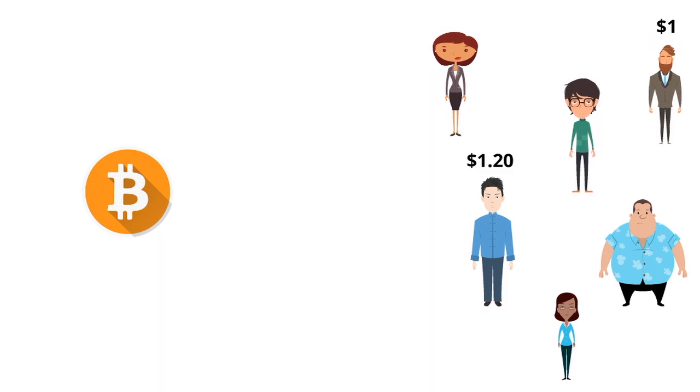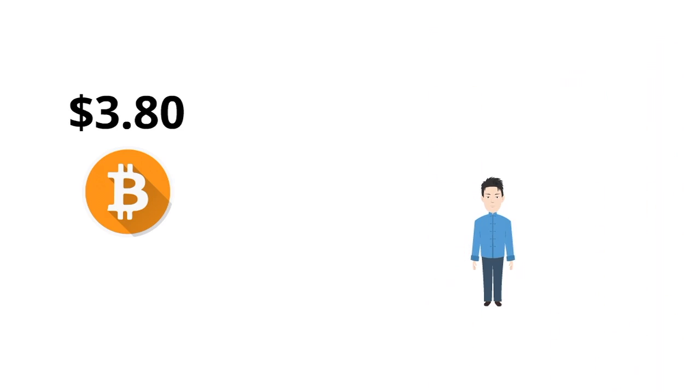So he bids $1.20 for the one Bitcoin. Person three bids $1.40, all the way up to person 15, who by this time, five people have dropped out of the auction before it even begun, and the price of Bitcoin has now reached $3.80. And the person who sold the Bitcoin made a $2.80 profit after everyone but one person dropped out of the auction.